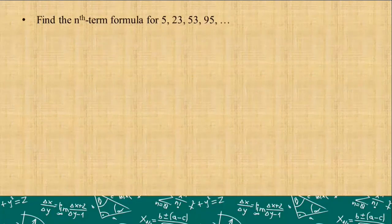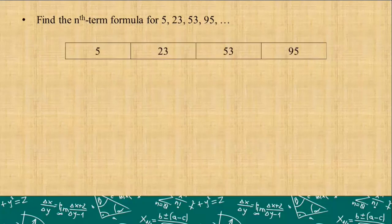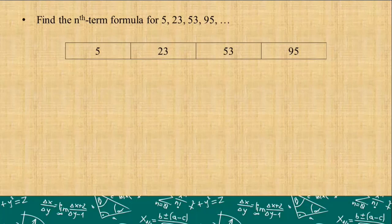Suppose you have this sequence 5, 23, 53, 95, and so on. And you have to find the nth term formula or the general formula for this sequence. We will write them with some distance from each other, because the space between them is crucial since we will place the differences there.